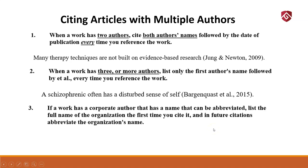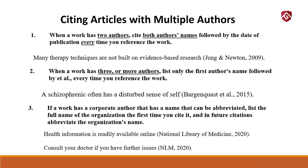If a work has a corporate author with a name that can be abbreviated, list the full name of the organization the first time you cite it, and in future citations abbreviate the organization's name. For example: 'Health information is readily available online' (National Library of Medicine, 2020). That's the first time I'm citing them. But if I'm going to cite them over and over again in this paper, we'll know who National Library of Medicine is. We don't need to keep seeing this over and over again. The first time, list their full name. All future times, just put the abbreviation: NLM, 2020. But don't abbreviate the first time.